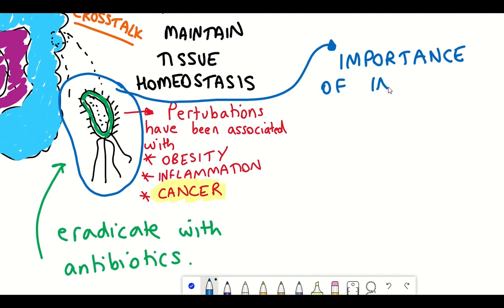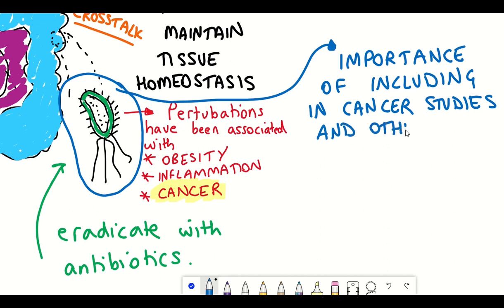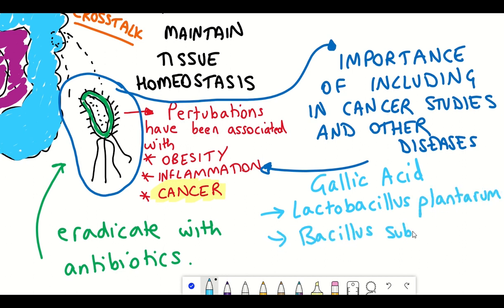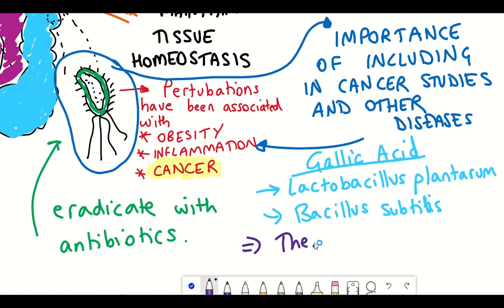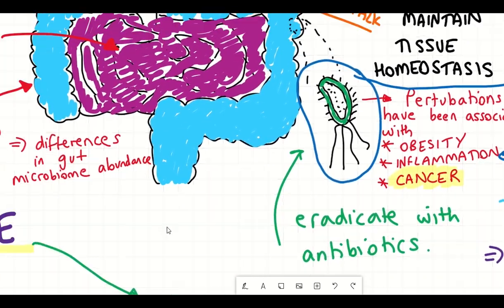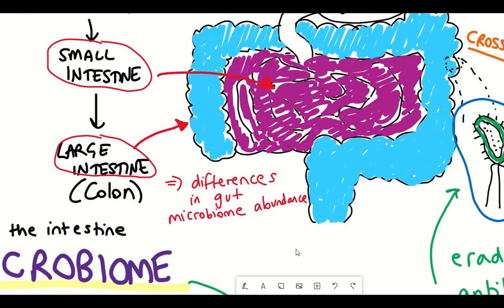These studies were done in mice, but the presence of gallic acid is also seen in humans, derived from two different bacterial strains: Lactobacillus plantarum and Bacillus subtilis. Understanding gallic acid and its involvement in this switch in mutant p53 properties could also have therapeutic potential — for instance, identifying drugs that could inhibit the enzymes within these bacterial species that enable the production of gallic acid. It might also explain why cancer of the small intestine is far less prevalent than in the colon.